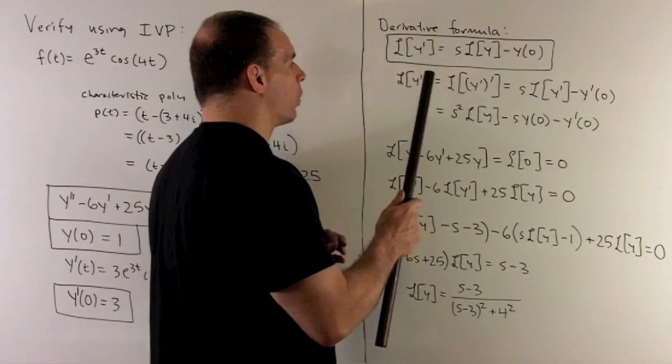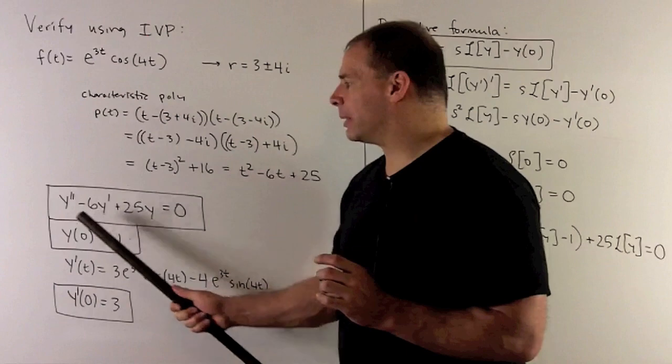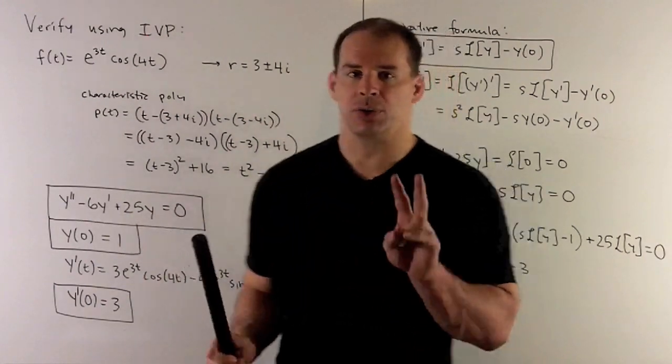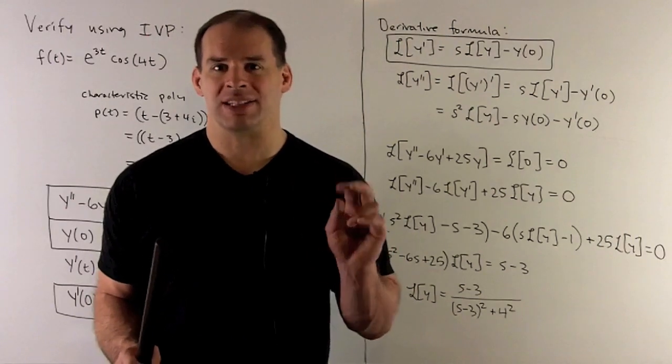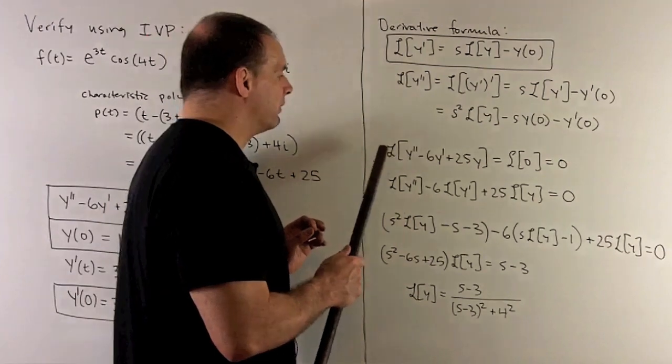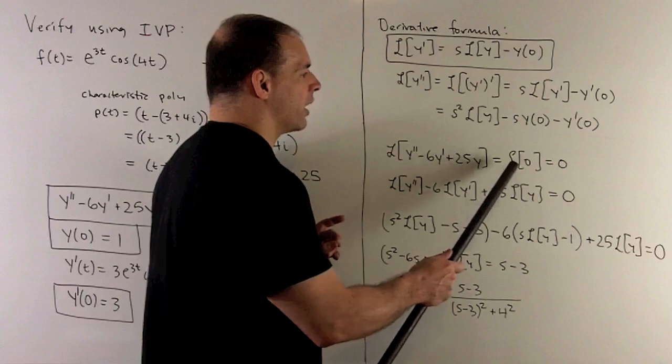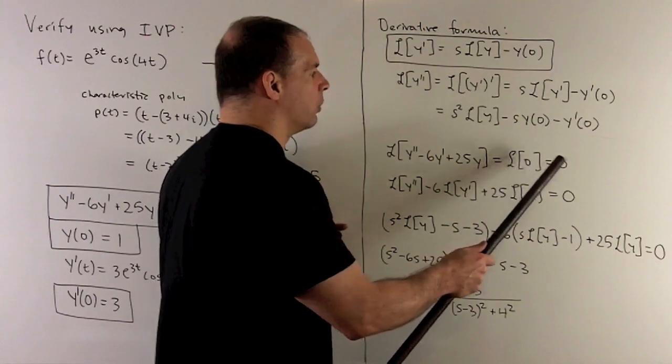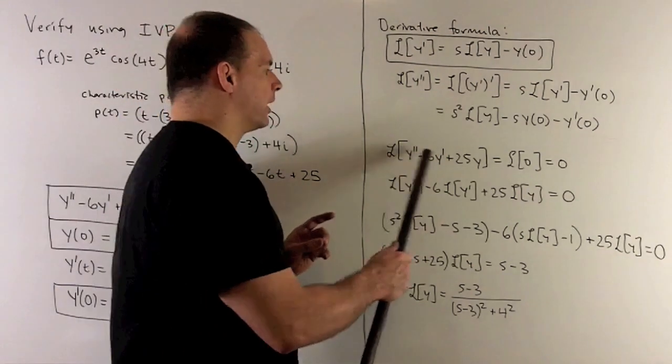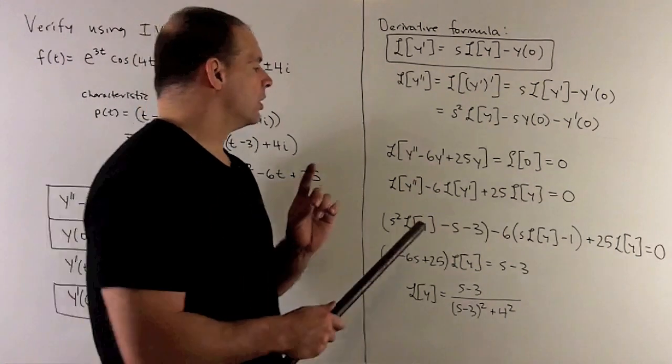Now we have Laplace transform formulas for second and first derivative. I want to apply the Laplace transform to both sides of this ODE. If two things are equal, take the Laplace transform, they stay equal. We have Laplace transform of our derivatives using these formulas. On the other side, Laplace transform of 0 is always 0. We use the linear property to break up the sums and pull out the numbers.